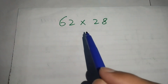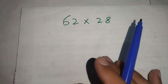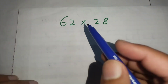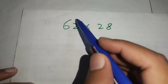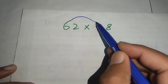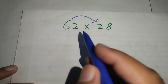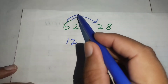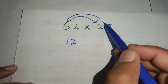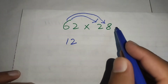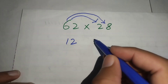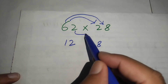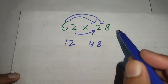We multiply 62 by 28. First we multiply 6 by 2 and get 12. After that we multiply 6 by 8 and get 48. After that we multiply 2 by 2.